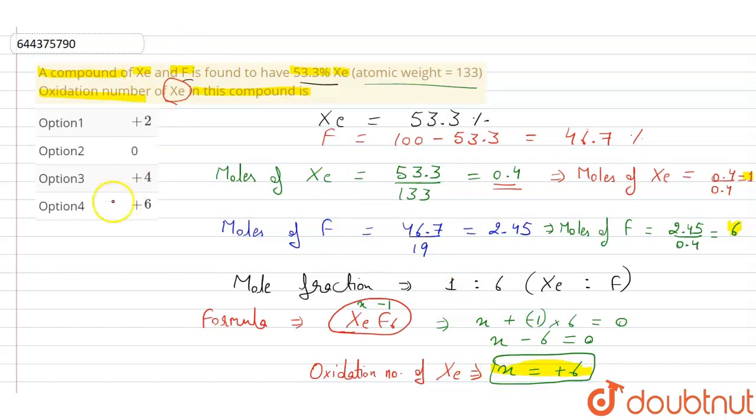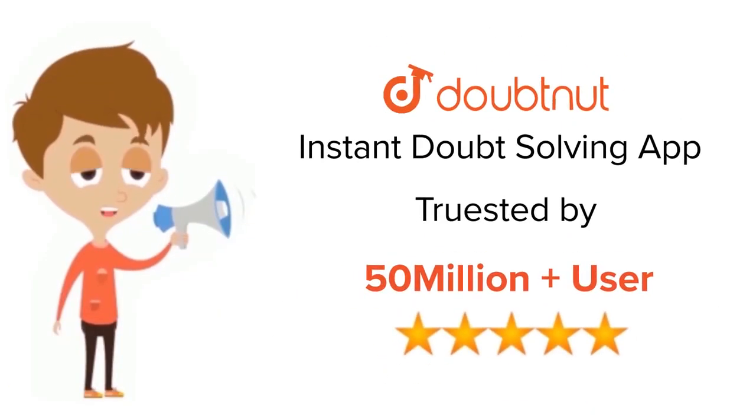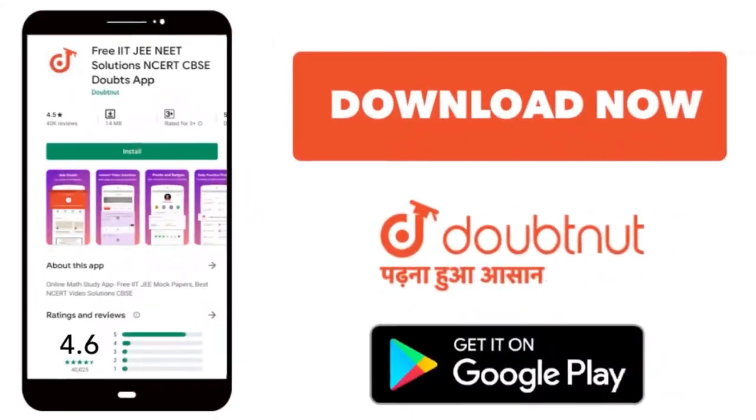The oxidation number of xenon is plus 6, and therefore the option will be option 4, plus 6. Thank you. For class 6 to 12, IIT-JEE and NEET level, trusted by more than 5 crore students. Download Doubtnet today.